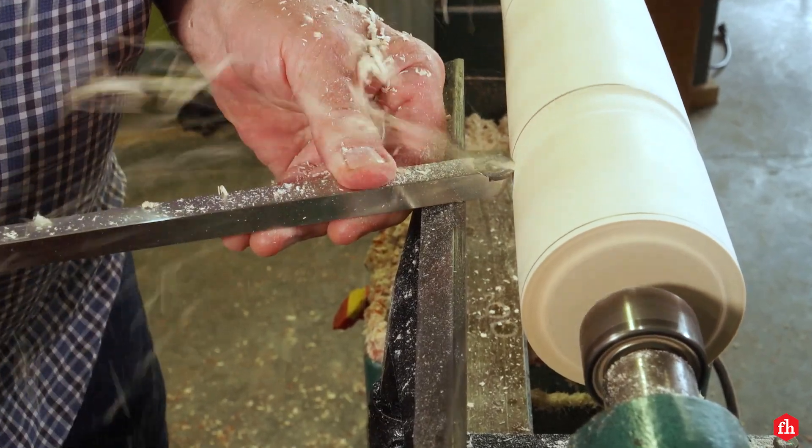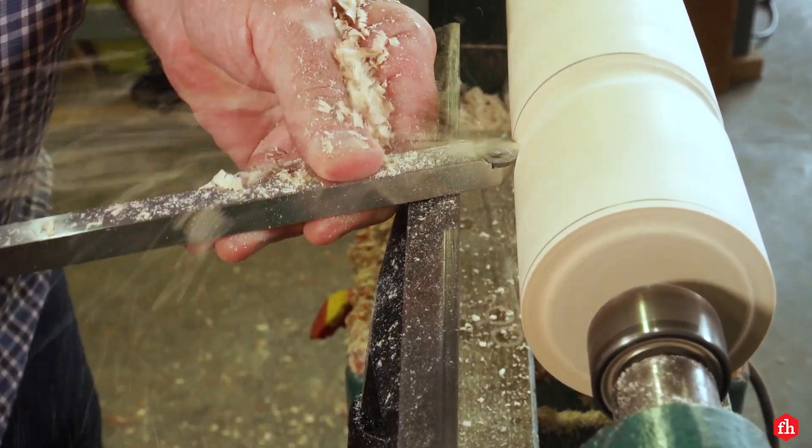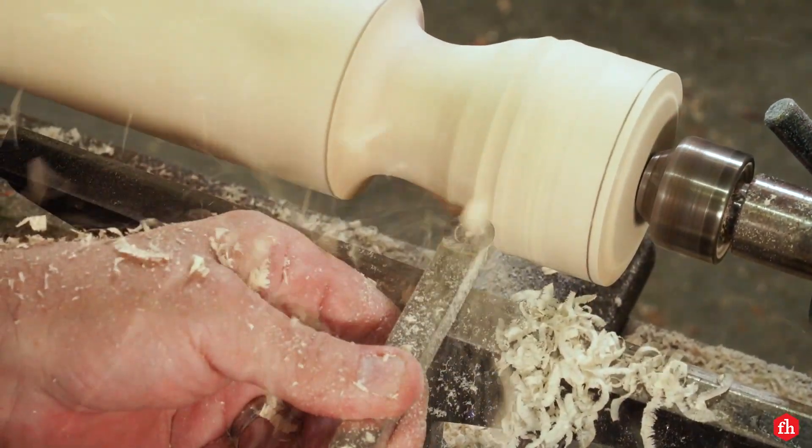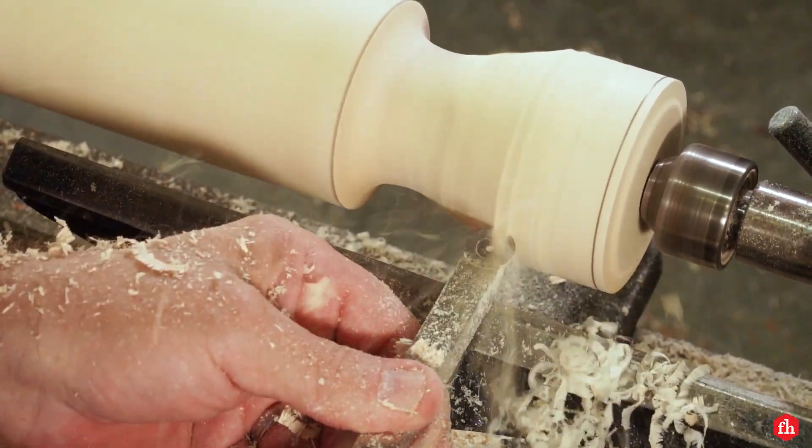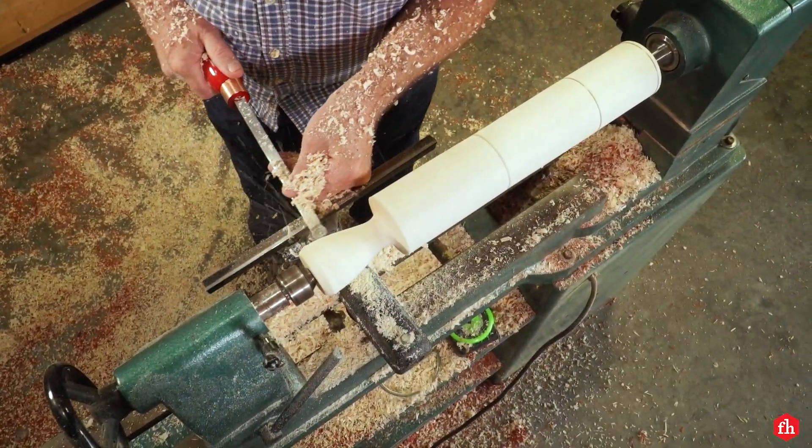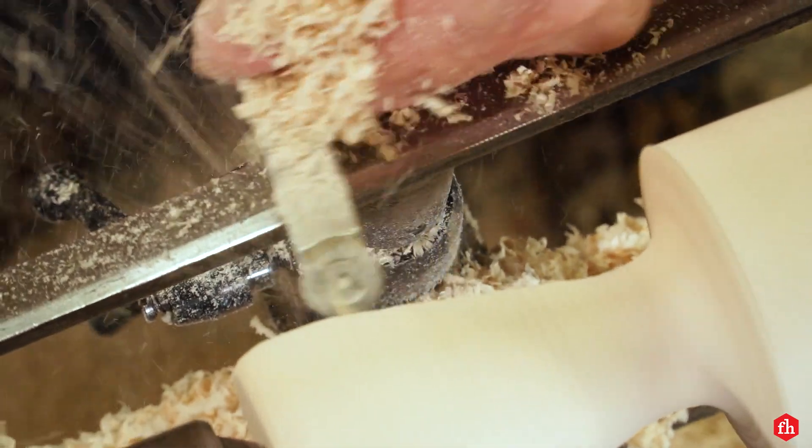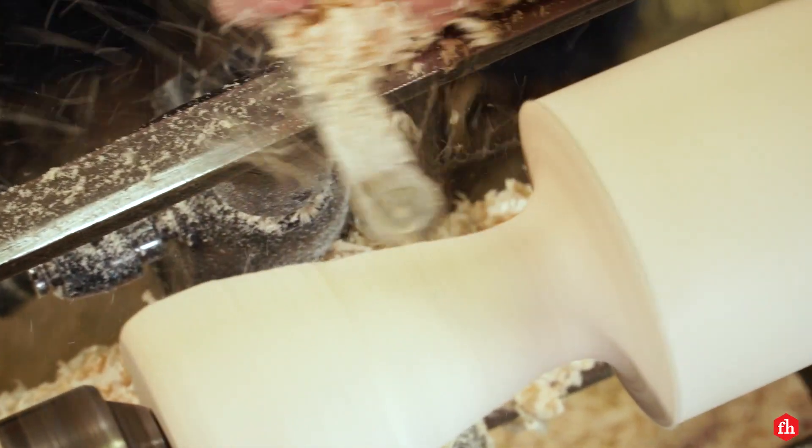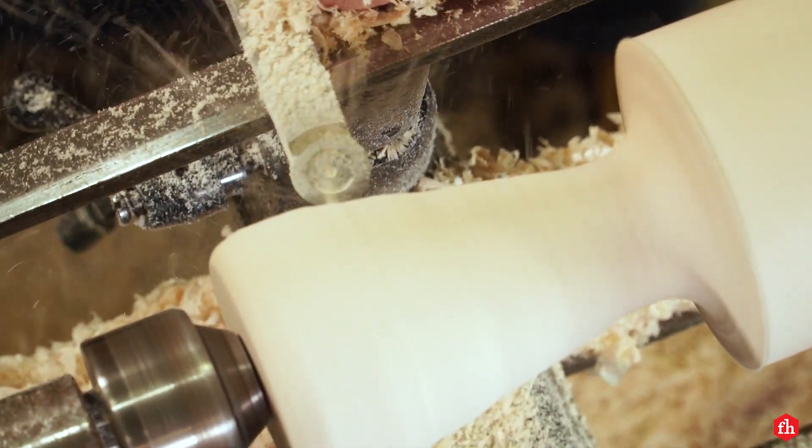Again, starting on one end, I sculpt the handle to how I want it to look and feel in my hand. Once I'm satisfied with it, I copy it to the other side. Remember to always take your time and don't be in a hurry.